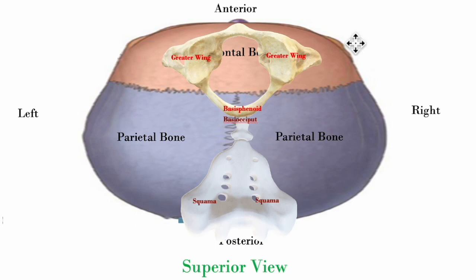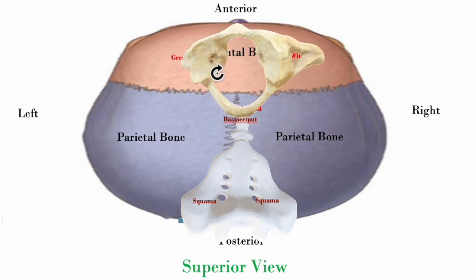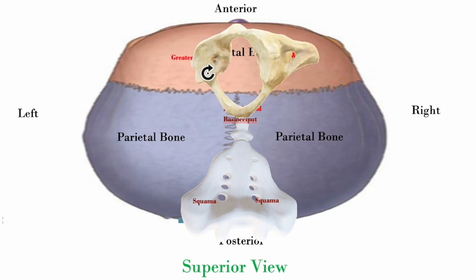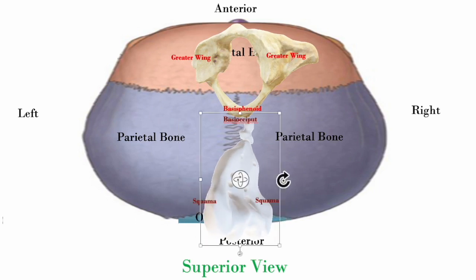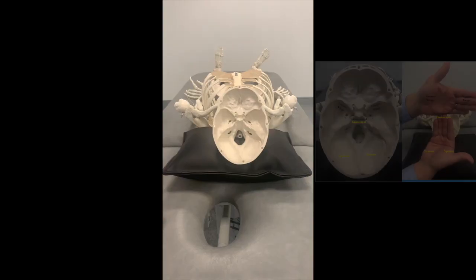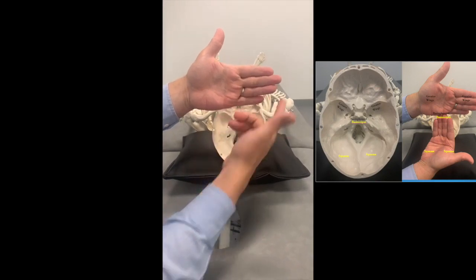Another cause of torsion: if someone gets hit on the bottom of their jaw, more on the right side — not midline — causing an undercut that drives the right greater wing superiorly. The sphenoid compensates, and that's another way you could have a right torsion.